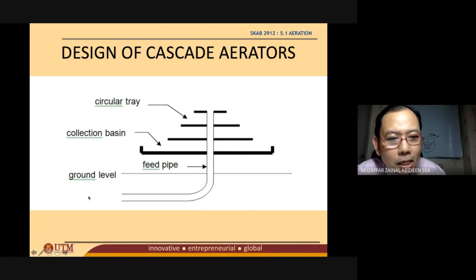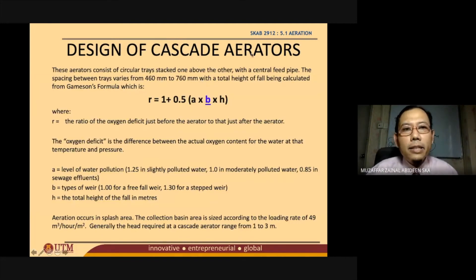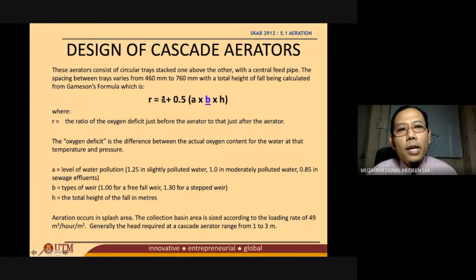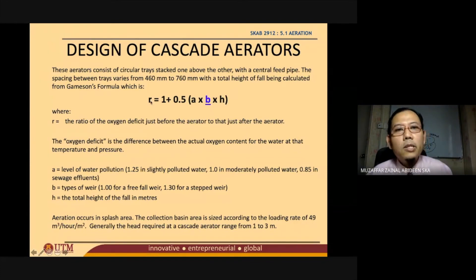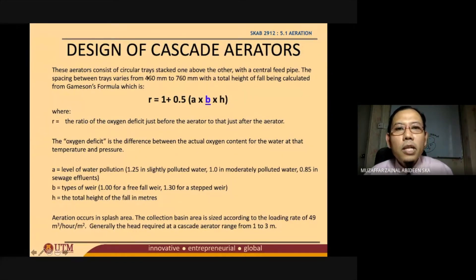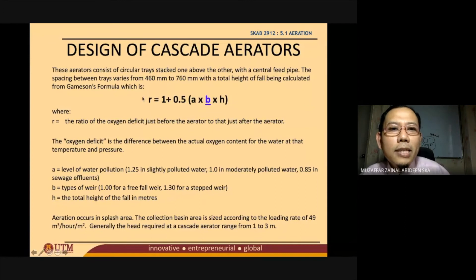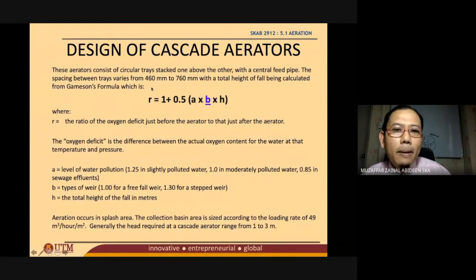When designing cascade aerators, you are introduced to the Gammeson formula. The Gammeson formula is: R = 1 + 0.5 × a × b × h. You don't need to memorize this — in examinations, the equation will normally be given. The value 1 is just the constant, and 0.5 is a fixed number.